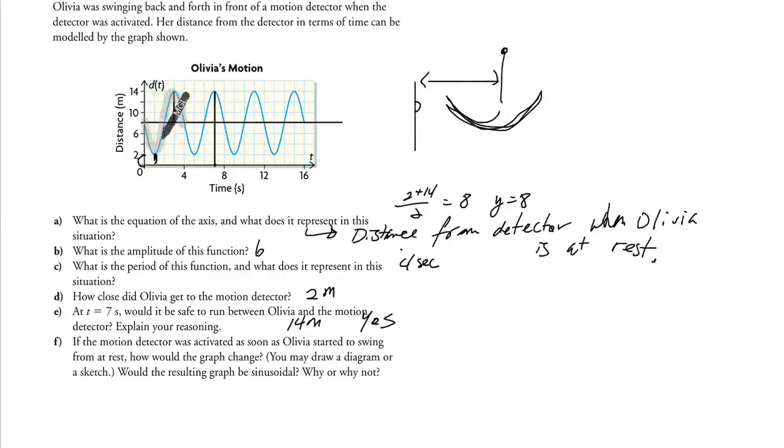So this indicates she starts swinging towards the detector. But she could also swing away from the detector first, so go this way first and then come back around. If that was the case, it would go up, down, and then up, down, instead of going down and up. So it may or may not change depending on which way she started swinging from. If she starts swinging this way first, then this is the graph. If she starts swinging this way first, that's the graph.